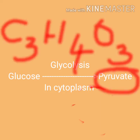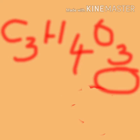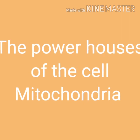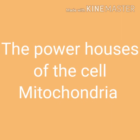This process takes place in the cytoplasm. In aerobic respiration, the pyruvate molecule oxidizes in the mitochondria to release 6 molecules of carbon dioxide, 6 molecules of water, and 38 ATP of energy. Mitochondria are the sites of aerobic respiration in the cells.